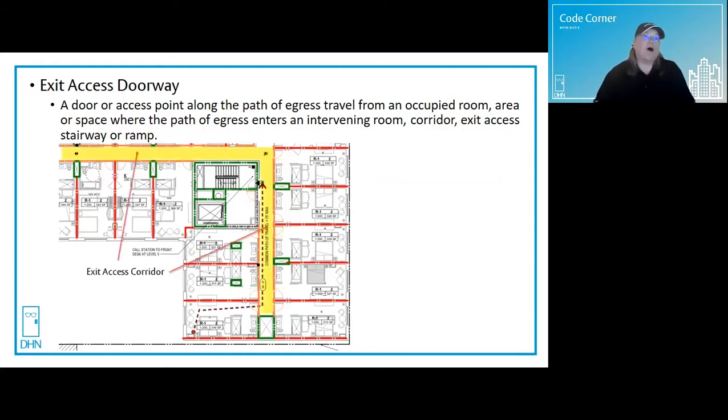And if you're walking along the corridor, that is considered an exit access corridor. By limiting the travel distance to an exit, the code is limiting how long an occupant spends in the exit access portion of a means of egress.